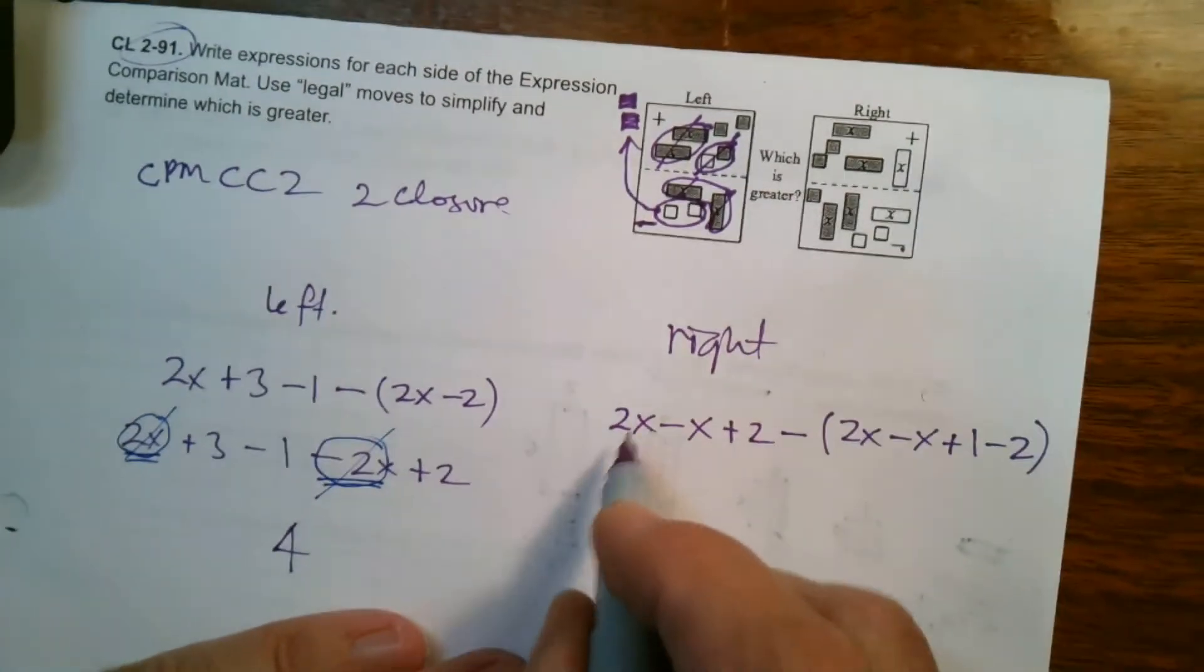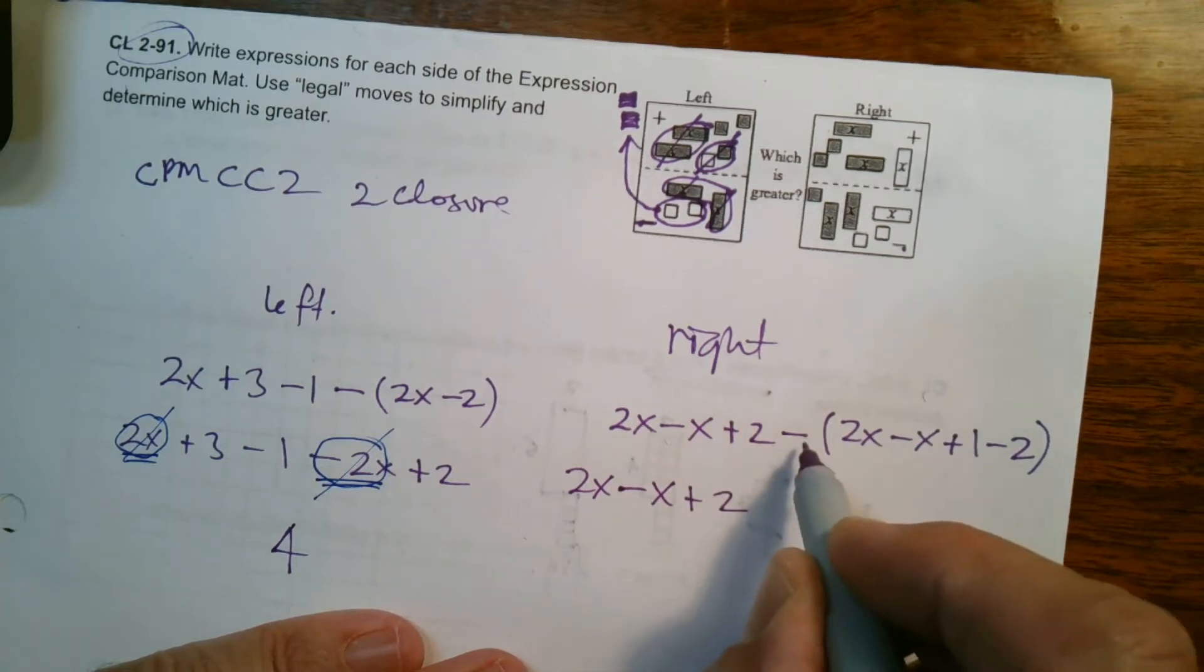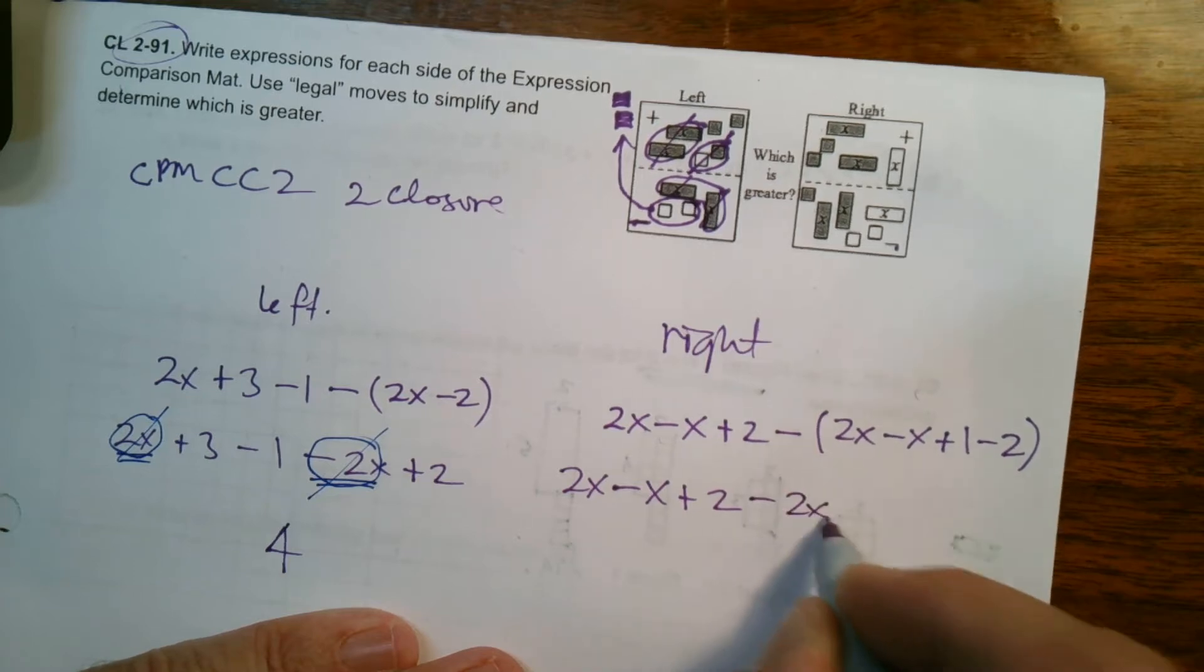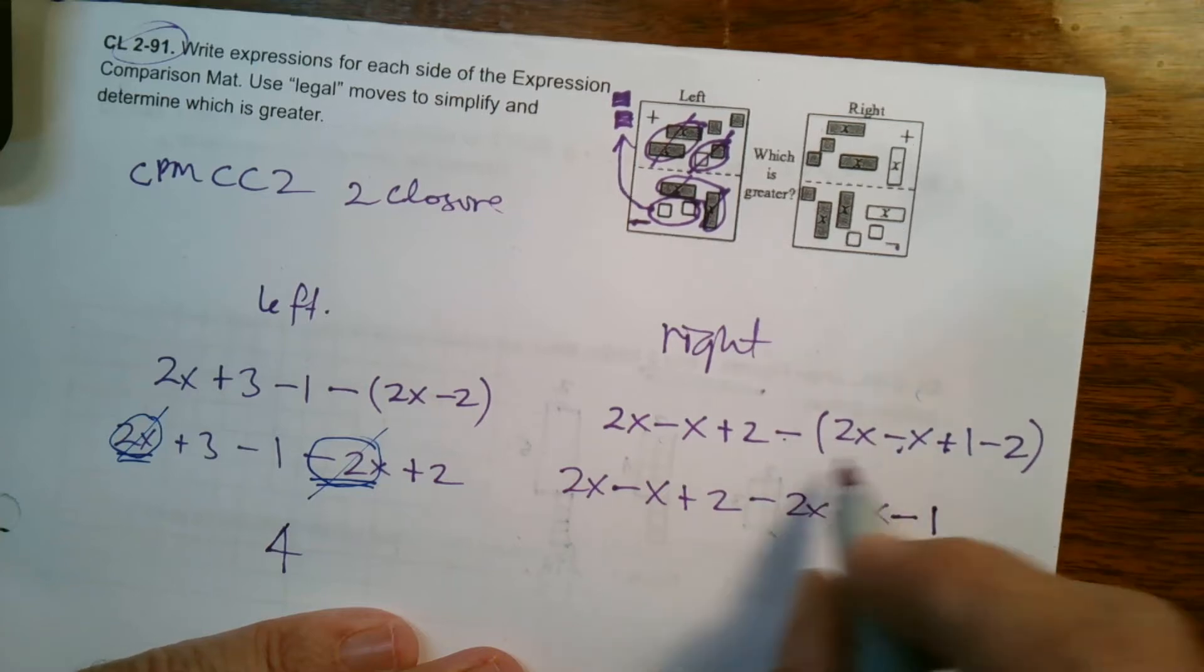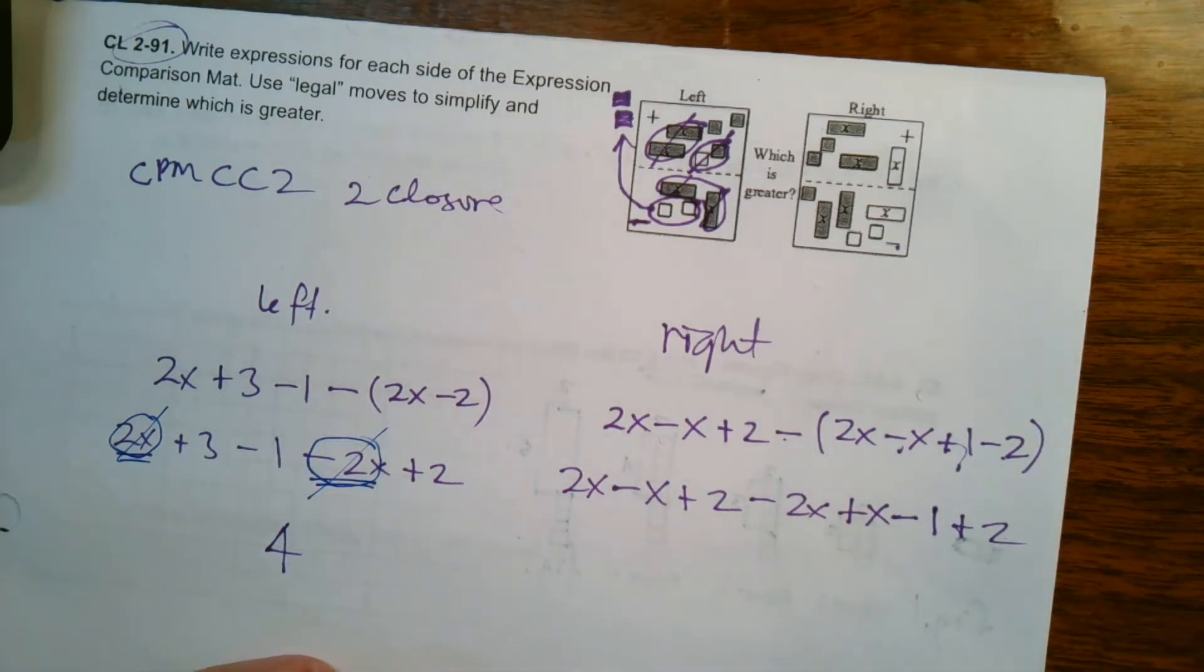So let's do the same thing over here. So I'm going to rewrite this without parentheses: 2x - x + 2. And then remember that minus sign distributes and changes all the signs. So it's minus 2x and then minus minus makes it plus x. And then minus plus makes it minus one. And then minus minus again makes that plus. So it just changes all the signs.